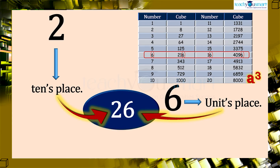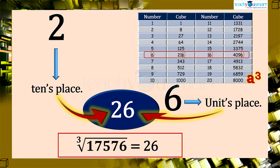Therefore, the required number is 26. That is, the cube root of 17,576 equals 26. Using this method, we can estimate the cube root of any given perfect cube number.